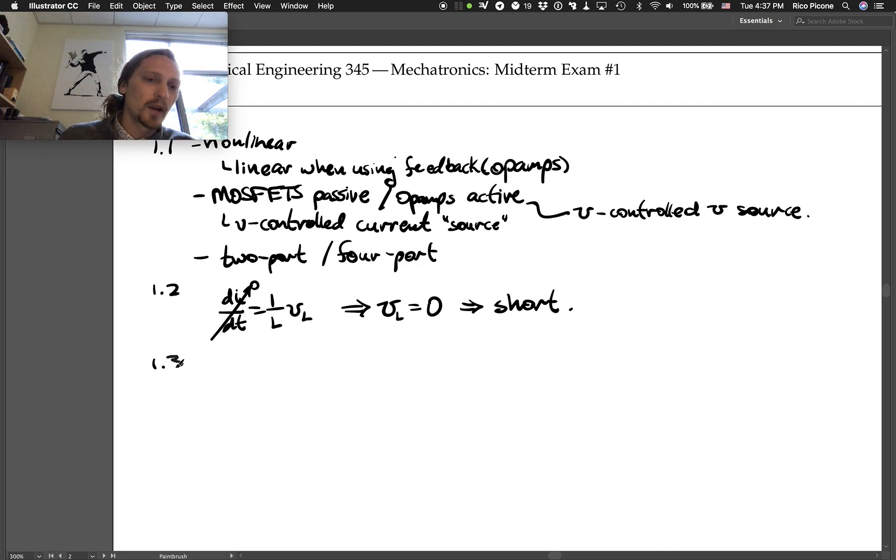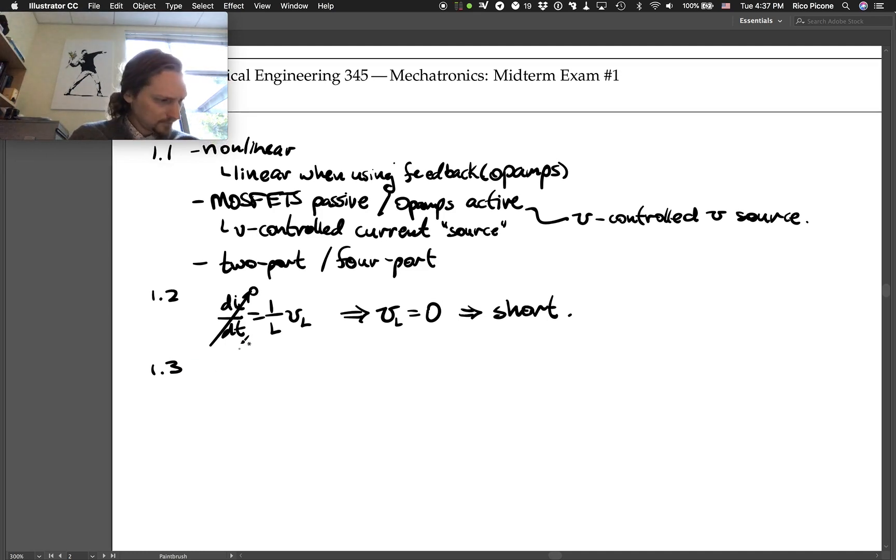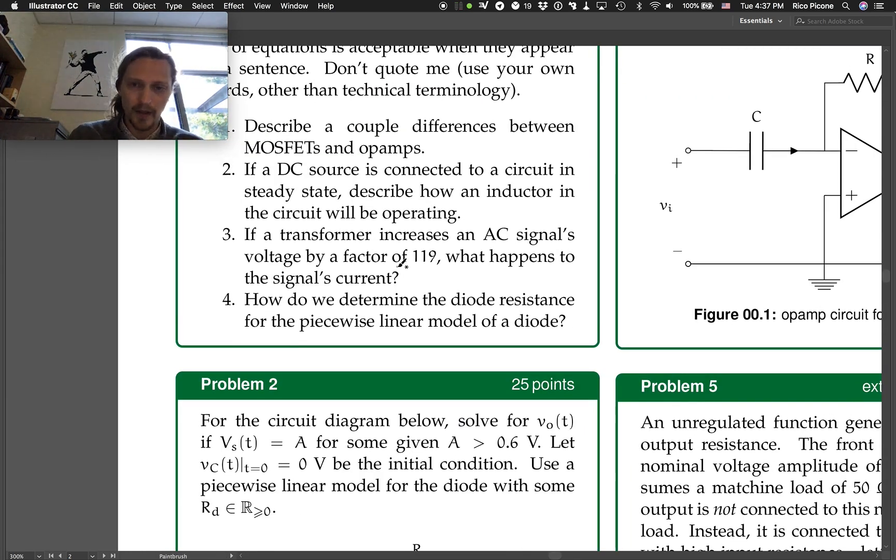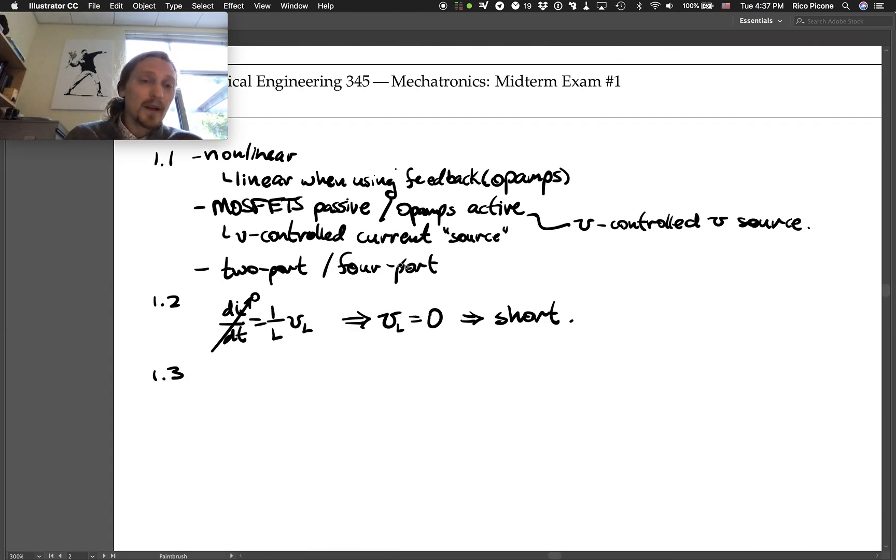Okay, 1.3, if a transformer increases an AC signal voltage by a factor of 119, what happens to the signal's current? So if we go back to the elemental equation for a transformer, we know that we are trading off voltage and current. I accepted, so there's, so it's actually the negative reciprocal.